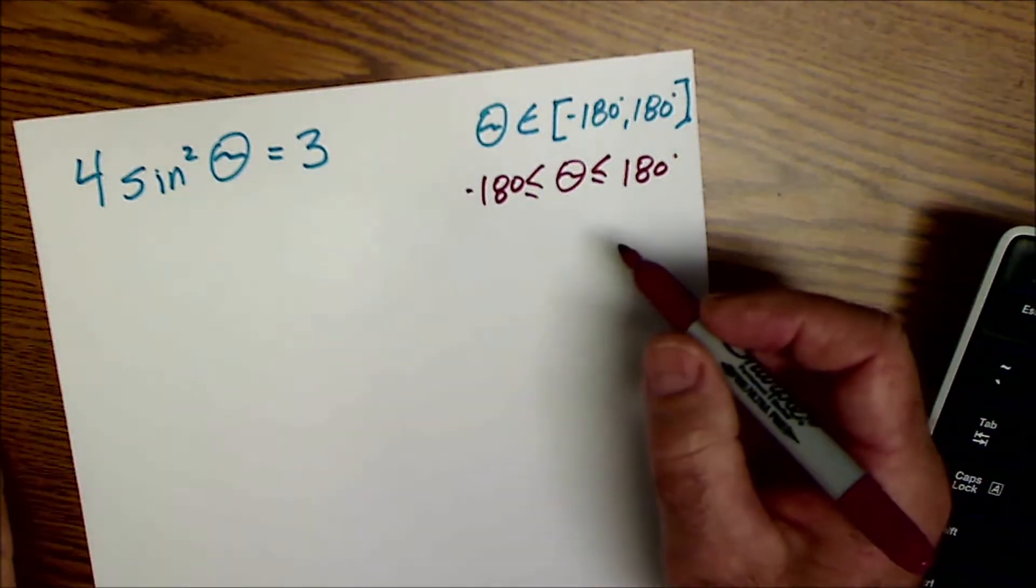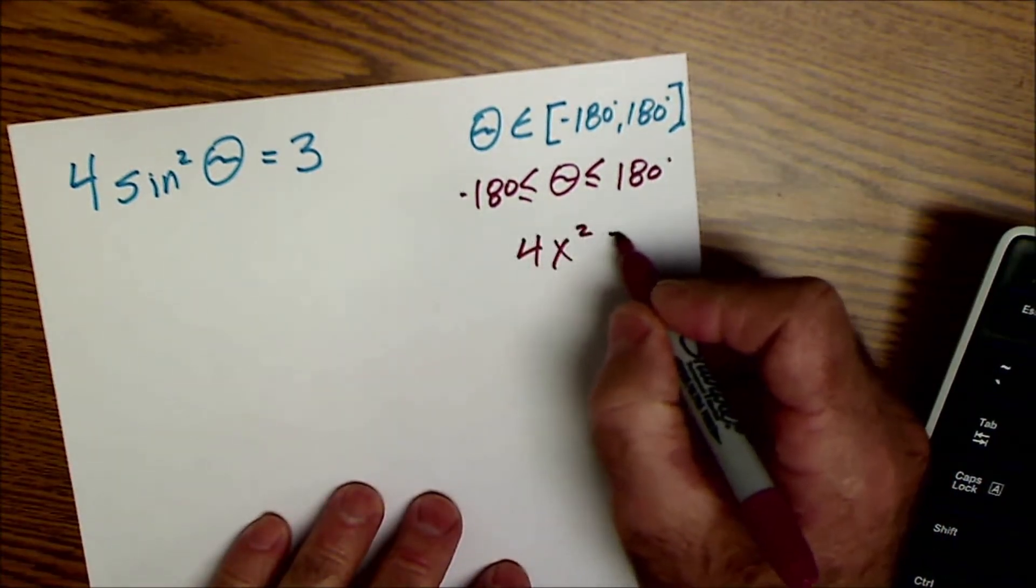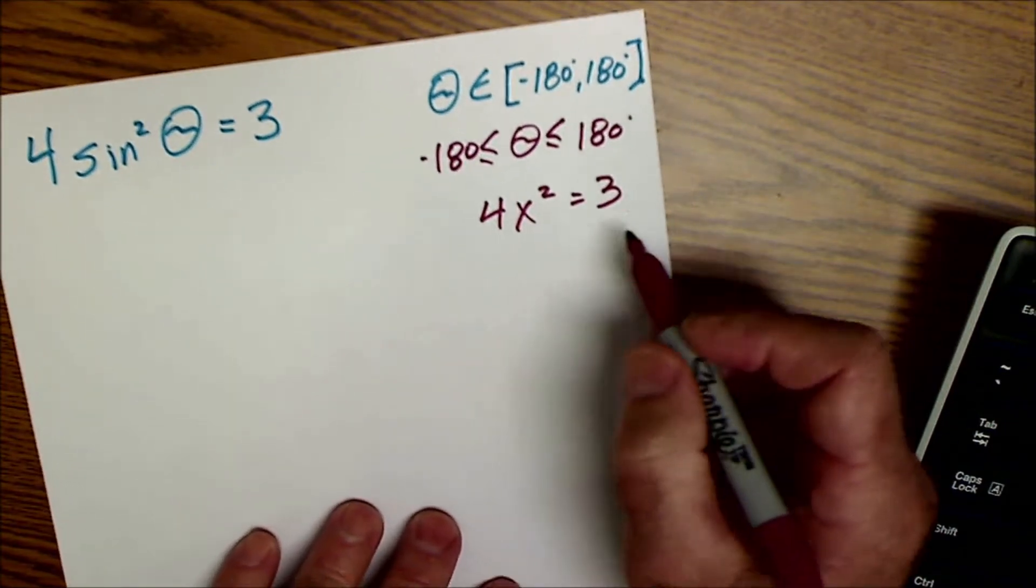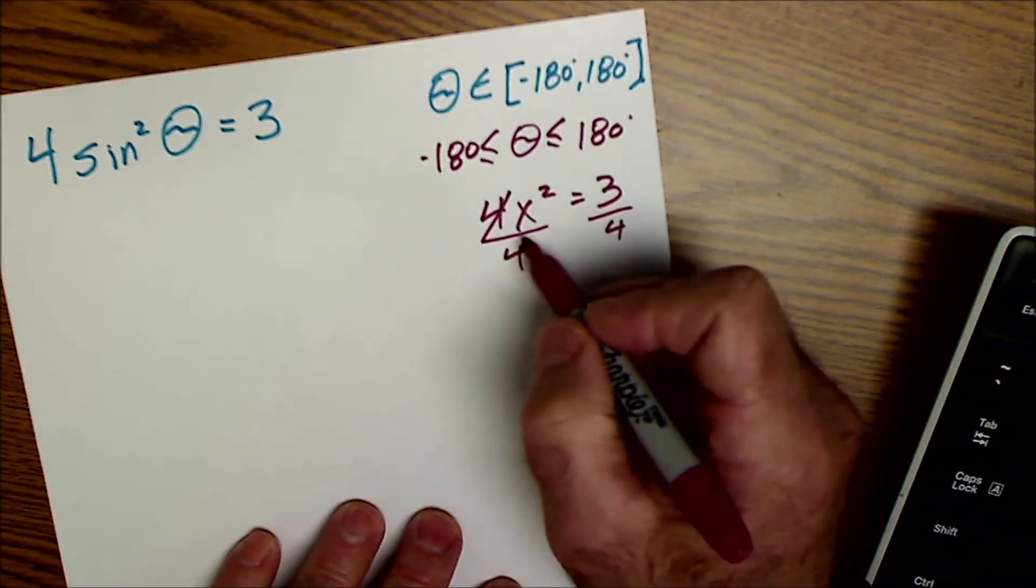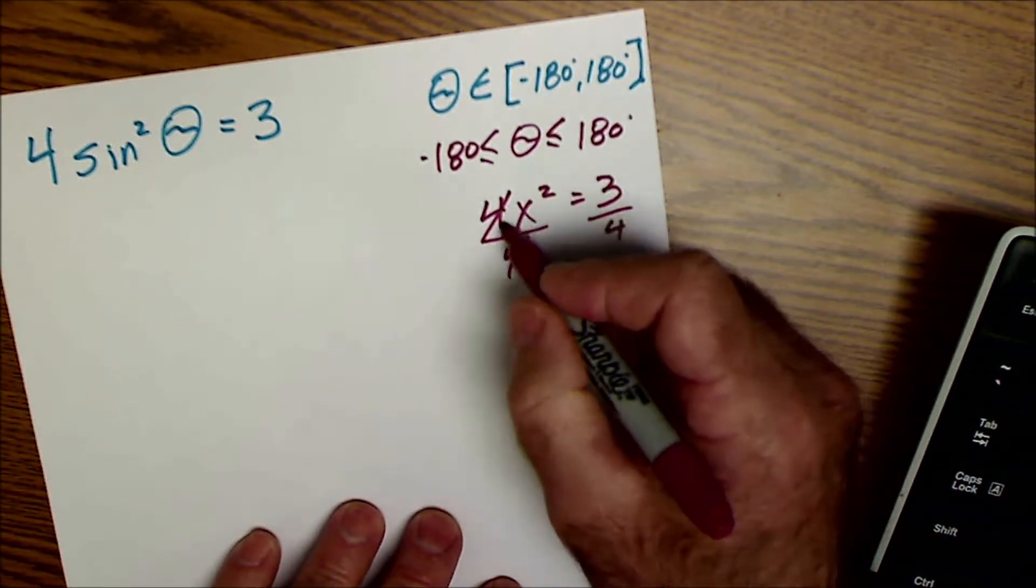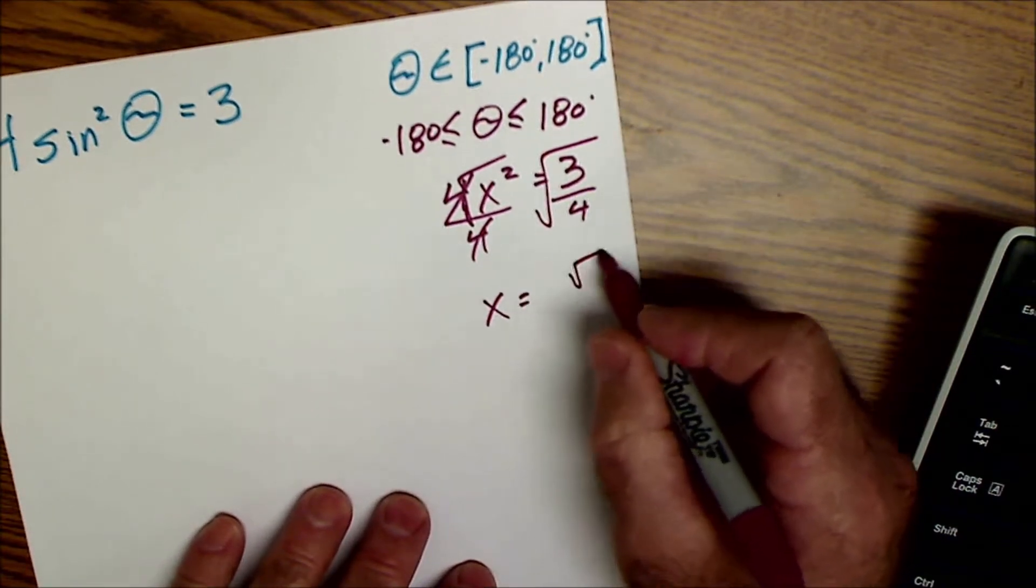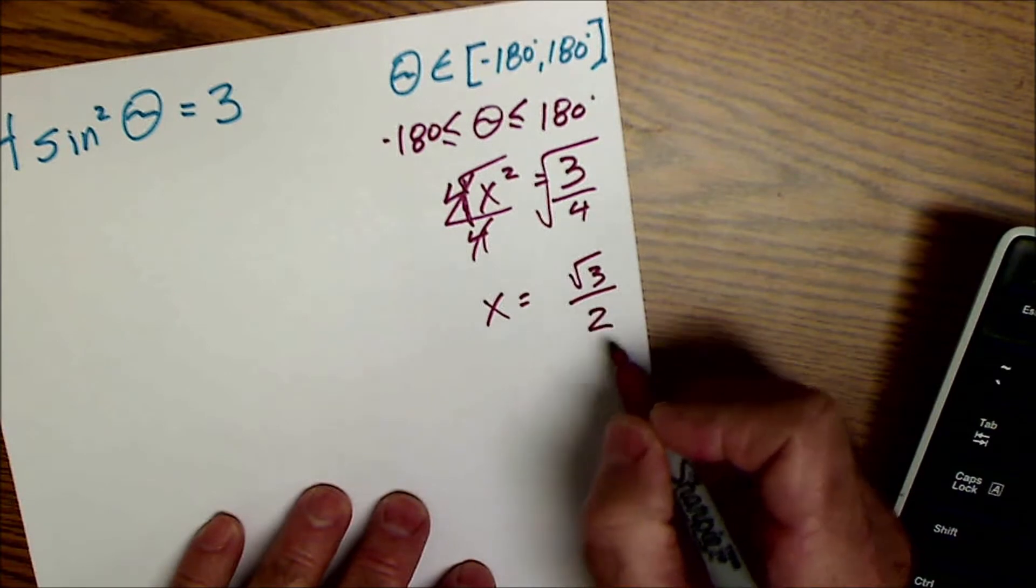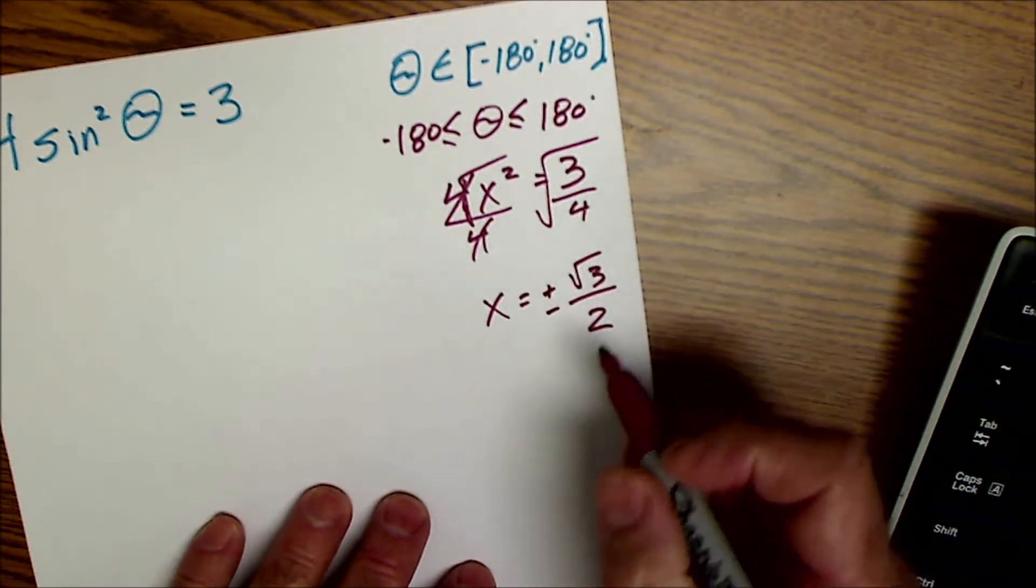This is really no different than saying 4x squared is equal to 3, solve for x. The way I do that is divide both sides by 4. Those will cancel, take the square root of both sides, and x is equal to the square root of 3 over the square root of 4. But don't forget when you take the square root, it's both plus or minus.